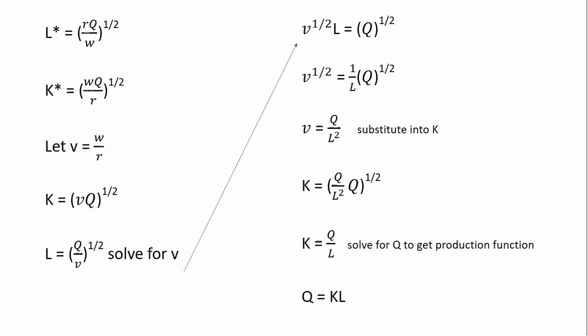The next step is to substitute this result back into our conditional input demand function for capital. Here's capital, and V we now write as Q divided by L squared, so I make that substitution. Simplifying: Q to the 1-half times Q to the 1-half is just Q, and L-squared raised to the 1-half power is just L.